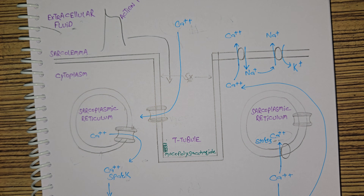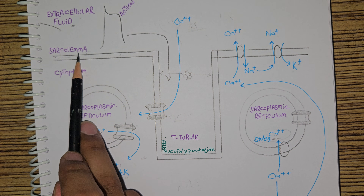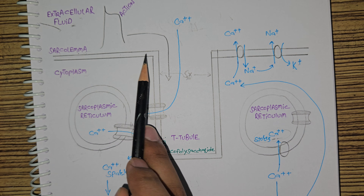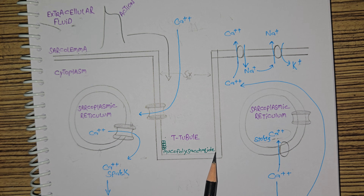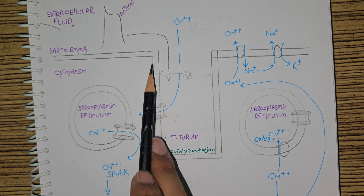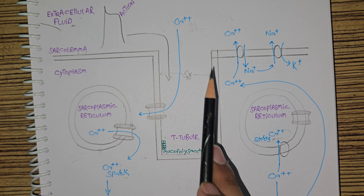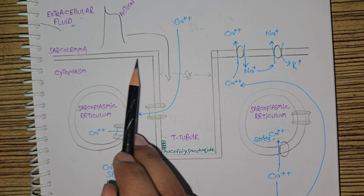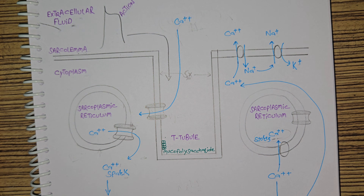As you can see, this plasma membrane or sarcolemma of the cardiac muscle cell forms a U-shape — it forms a U inside the cytoplasm. This U-type dip is called the T-tubule of a cardiac muscle cell.